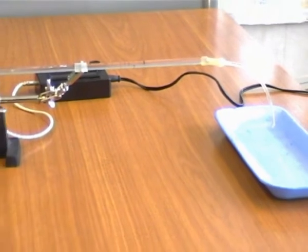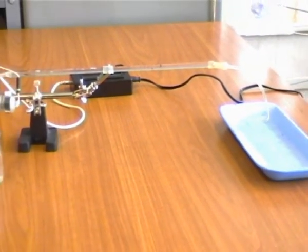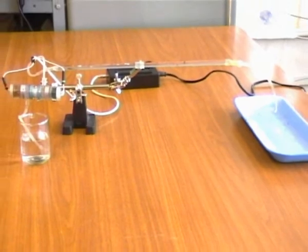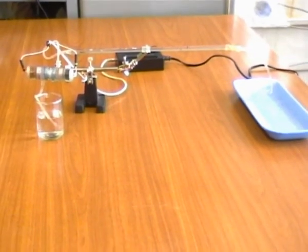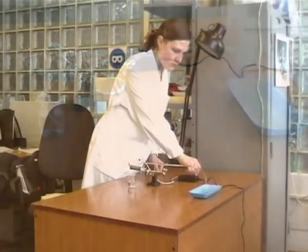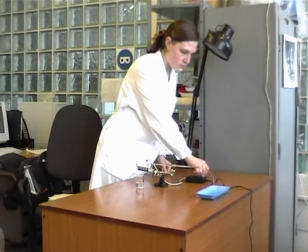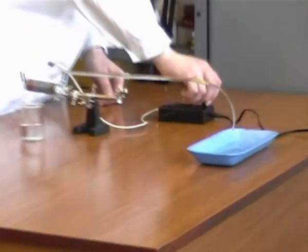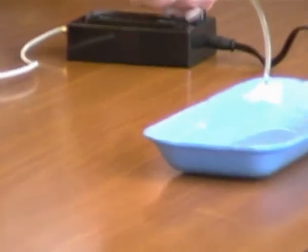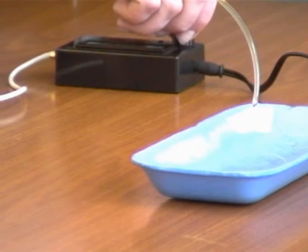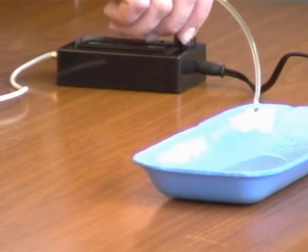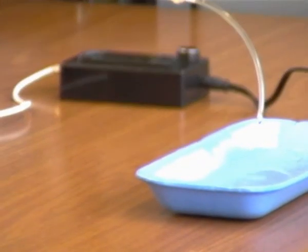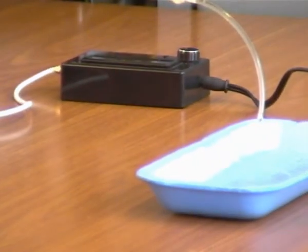The device can be used for pumping water and water solutions. Flow rate regulation is very simple. To decrease or increase it, one needs only to change voltage. Depending on voltage, the stream can be regulated from nanoliters to milliliters per minute.